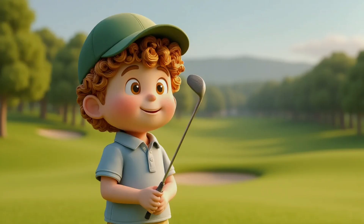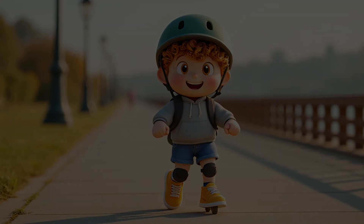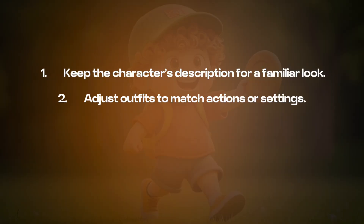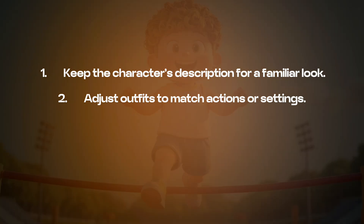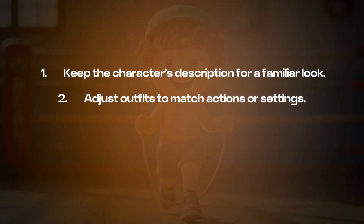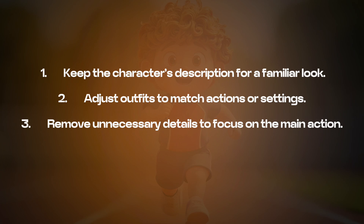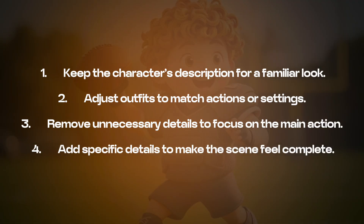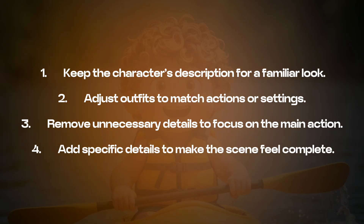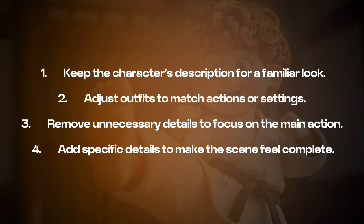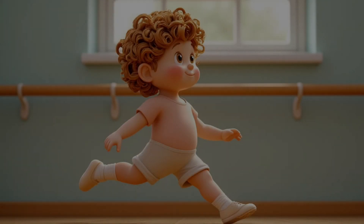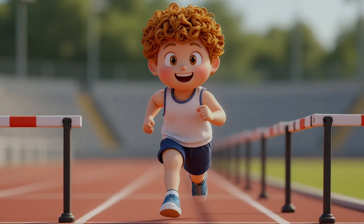To sum up, here are the main tips for consistent character images: keep the character's description for a familiar look; adjust outfits to match actions or settings; remove unnecessary details to focus on the main action; add specific details to make the scene feel complete. The more detailed and clear your description, the better the AI can match your vision. Thanks for watching and happy creating!